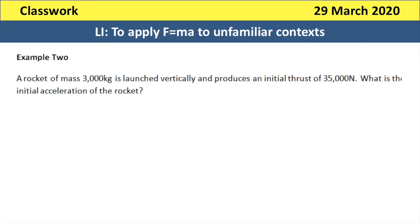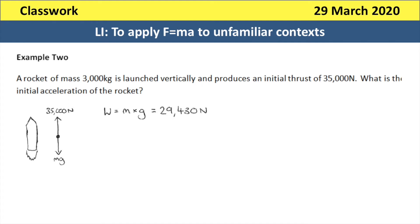Example two: a rocket of mass 3,000 kilograms is launched vertically and produces an initial thrust of 35,000 newtons. What is the initial acceleration of the rocket? We know the mass and the initial thrust. When we do a sketch of the forces, we need to know the weight of the rocket. We can work out the weight because weight is mass times gravitational field strength, so we do 3,000 multiplied by 9.81, which gives 29,430 newtons as the weight.